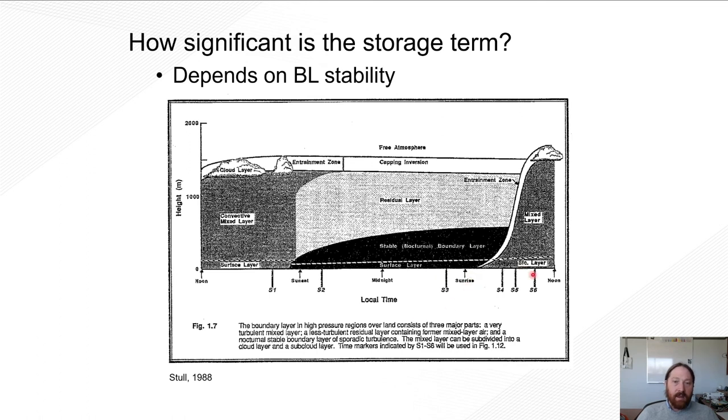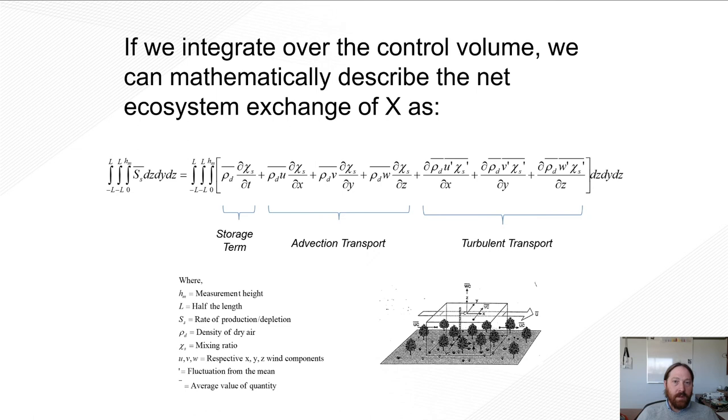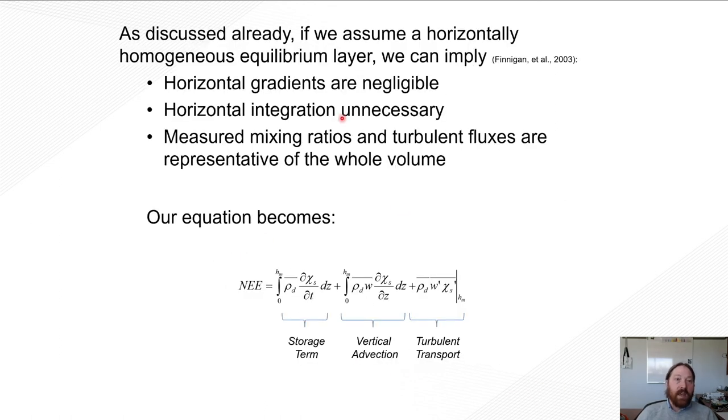And then the sun comes up and then that boundary layer begins, or that stable nocturnal boundary layer grows and or shrinks into a mixing layer. So our mixing layer comes up and churns up that gas that has stored below our sensor. Okay, so coming back to that theoretical box again, remember I said we have a storage term and an advective term and a turbulent term and that our assumptions are going to allow us to get rid of some of these terms. So we're only left with our vertical turbulent term and our storage term.